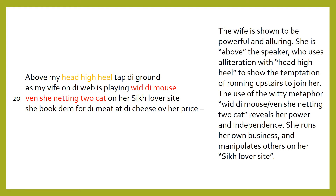The wife is shown to be powerful and alluring. She is above the speaker, who uses alliteration with 'head,' 'high,' 'heel' to show the temptation of running upstairs to join her. The witty metaphor of the mouse yielding to the cat reveals her power and independence. She runs her own business and manipulates others on her side.